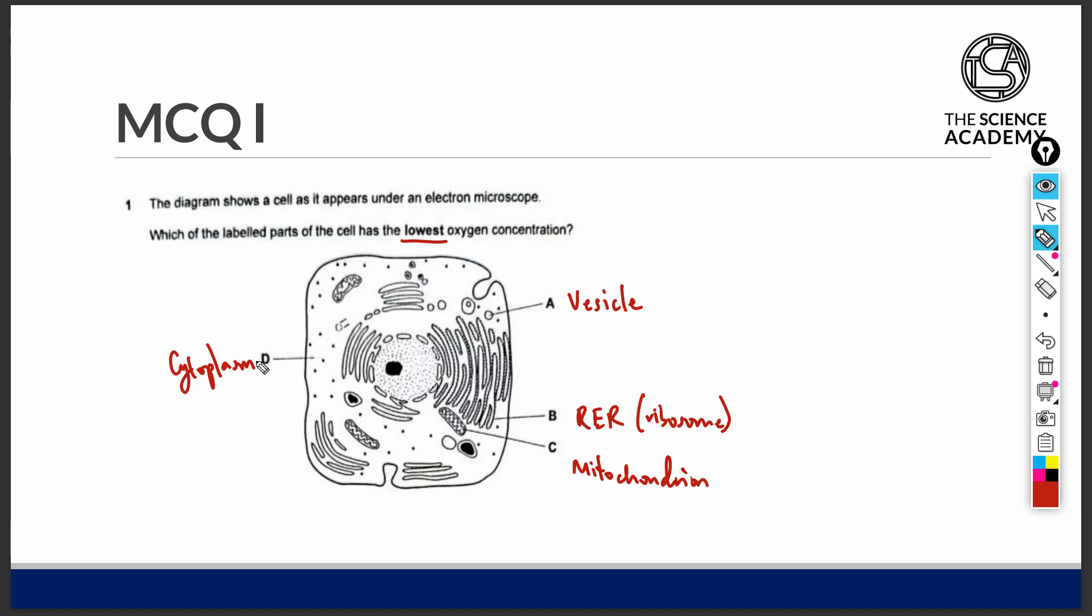We should know that in the cell, oxygen enters the cell by being dissolved in the extracellular fluid. And the mode of entry is via diffusion, because oxygen molecule is small enough to pass across the partially permeable cell surface membrane.